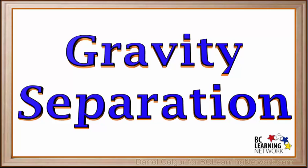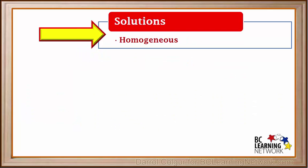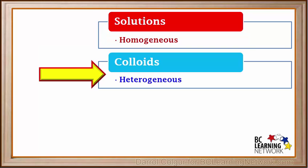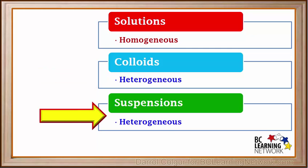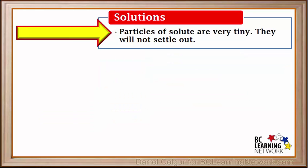In order to find out what kind of mixtures can be separated using gravity, we'll review the mixtures we've learned about so far. There are three main types of mixtures: solutions, which are homogeneous or uniform throughout; colloids, which are heterogeneous; and suspensions, which are also heterogeneous. In a solution, the particles of the solute are very tiny, almost the same size as the particles of the solvent.